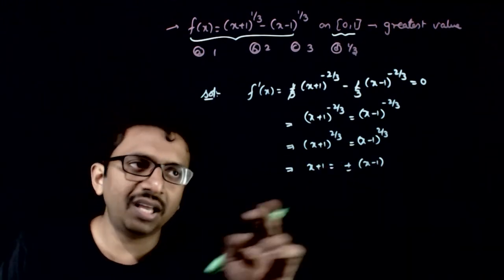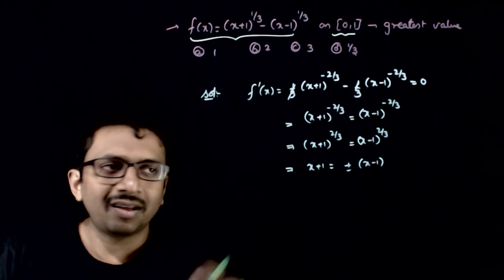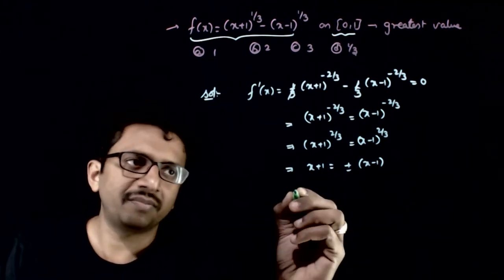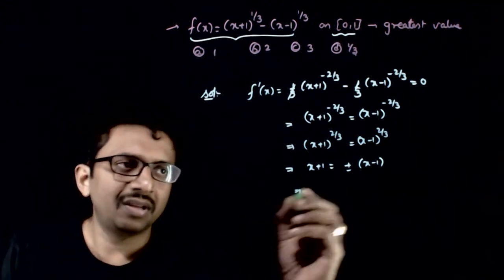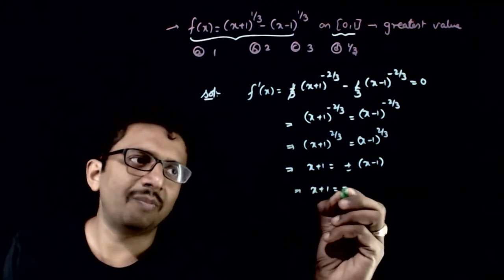Both of them can be directly equal or equal and opposite signs can also be there. This implies x plus 1 is equal to x minus 1 doesn't happen. So x plus 1 is equal to minus x.